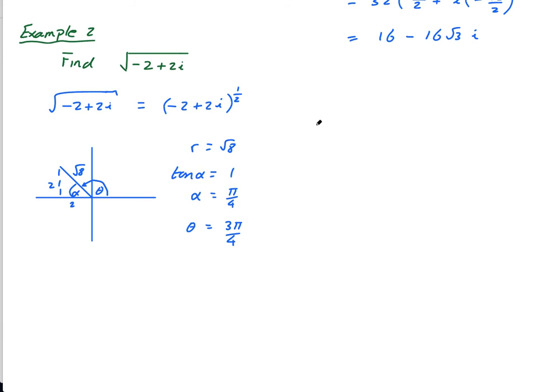So this thing here, minus 2 plus 2i to the power of 1 half equals, same thing, we're going to write this in modulus argument form, which is root 8 times cis theta is 3 pi over 4, all to the power of a half.